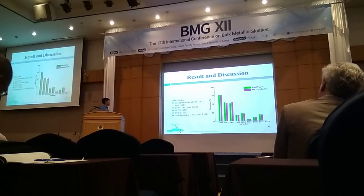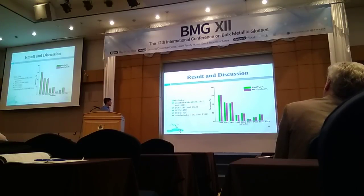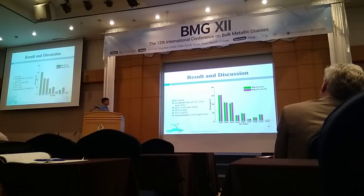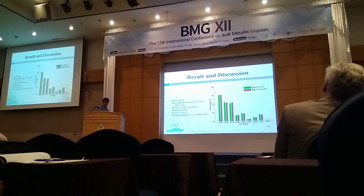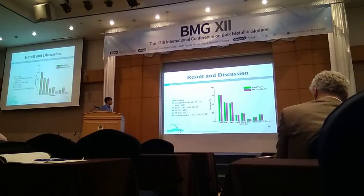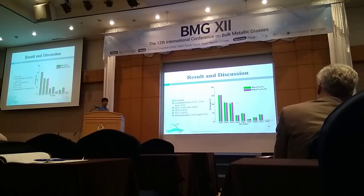Here we present our analysis using the HA index (Honeycutt-Andersen index). The indices 1551, 1541, and 1431 constitute the largest part of the amorphous structure as analyzed by this methodology. There still exists some difference in the 1541 and 1432 populations, as also found in the RDF analysis.